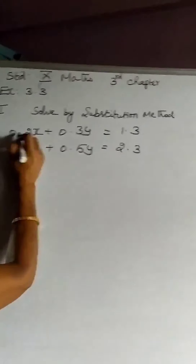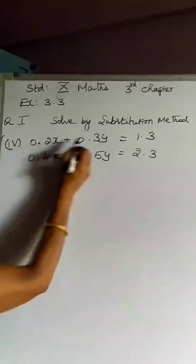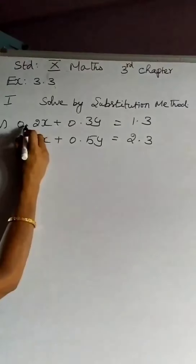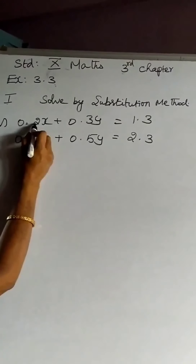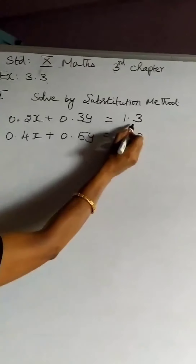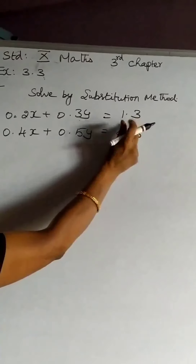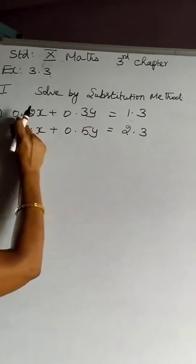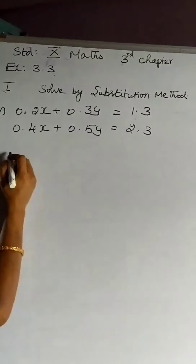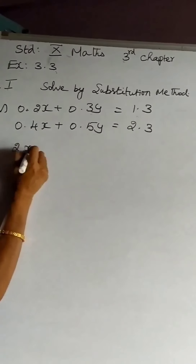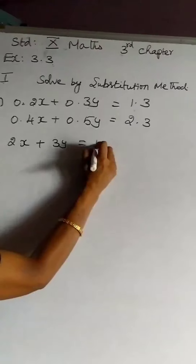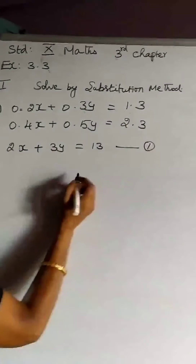You can see there is a decimal point in each and every place. After the point there is only one number — one decimal place — throughout. So throughout we have the same decimal places. Therefore directly the point can be eliminated, and we will get a simple equation. It is 2x + 3y = 13 as the first equation.